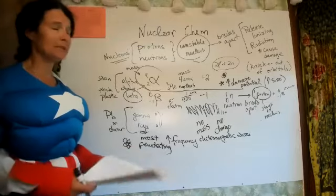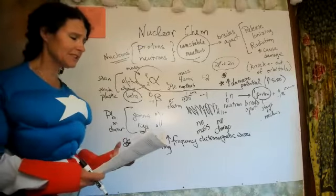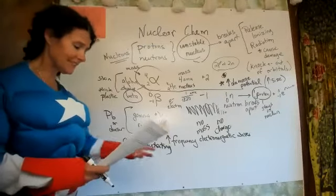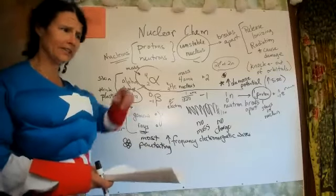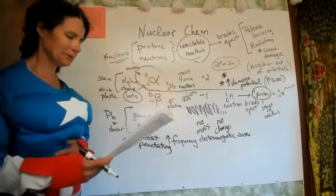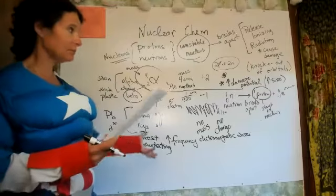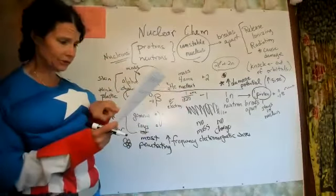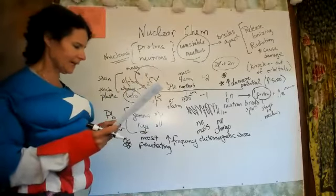Chernobyl is actually fascinating because it's now like a national park — there are rock formations and plant life that doesn't exist anywhere else and never existed there before. That was a nuclear reactor that melted down in the former Soviet Union before most of you were born. The alpha particle is the biggest one; the electron is the beta, and the photon is the gamma ray.